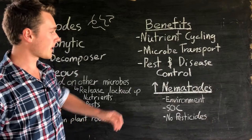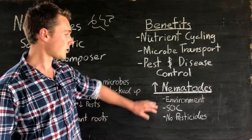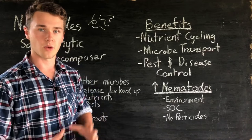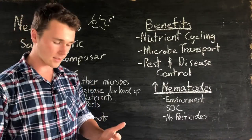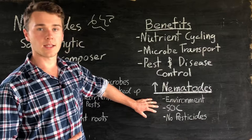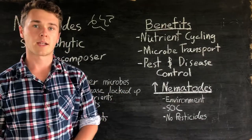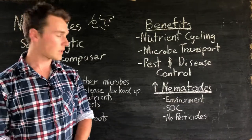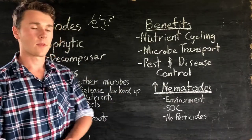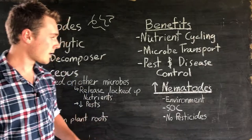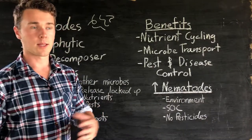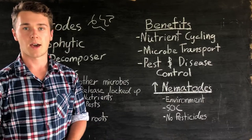To increase nematode population, it's the same as increasing any other microbe population. Firstly, we want to have the right environment — making sure we've got enough moisture, the right pH, and all those factors we've talked about for bacteria and fungi. Next, we want soil organic carbon, which is a source of energy for microbes. We also don't want pesticides, as they are generally bad for microbes. And you want to make sure you have lots of plant roots and plant matter in your soil to really protect our microbes.